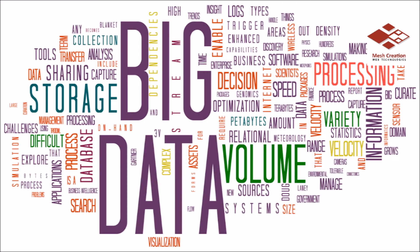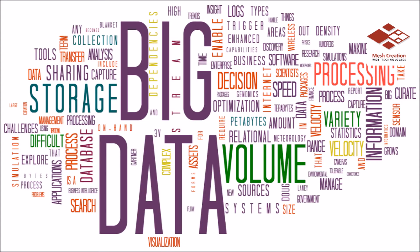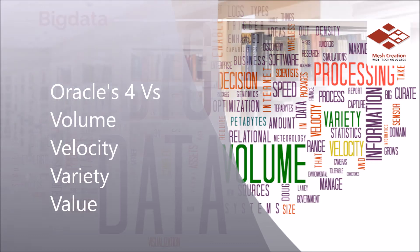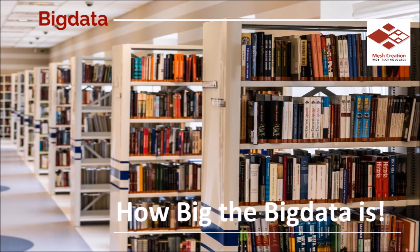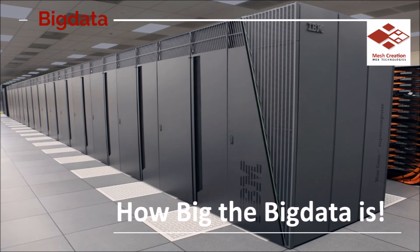Agar aapne notice kiya hoga, to aap dekhenge ki internet pe kaafi saari definitions mil jayengi jo Big Data ko apne perspective se define karti hai. Agar IBM ki baat karein, to Big Data ko 3V se define karti hai: Volume, Velocity, and Variety. Agar Oracle ki baat karein, to Big Data ko 4V se define karti hai: Volume, Velocity, Variety, and Value. Itni saari definitions available hain jo kaafi confusion karti hai, aur it has become difficult for people to understand what is Big Data.